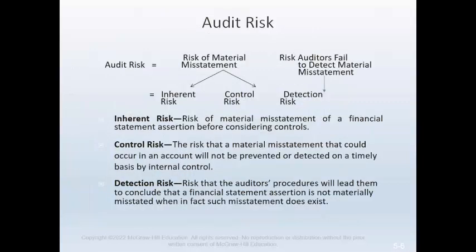Financial statement assertions are important to auditors because they should consider audit risk at the assertion level for all significant account balances, transaction classes, and disclosures. Audit risk consists of two components: first, the risk of material misstatement of a relevant assertion related to an account balance, class of transaction, or disclosure; and second, the risk that the auditors will not detect such misstatement, also known as detection risk.